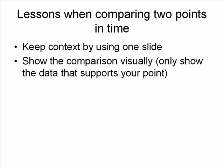As much as possible, show that comparison visually — and only use the data that supports your point. You may have a massive Excel spreadsheet or table of information that could lead to many different conclusions, which will confuse your audience. What you want to do is show only the information you need and do it visually. In this case, a pie chart, because we were talking about distribution, so a pie chart makes the most sense.